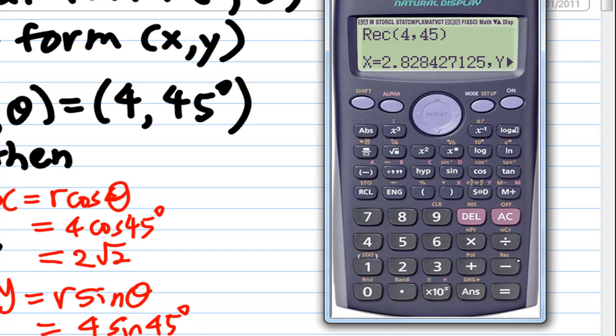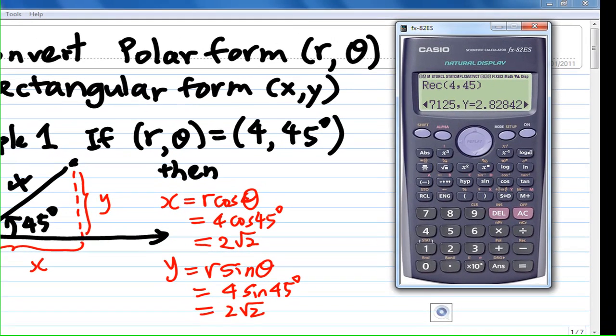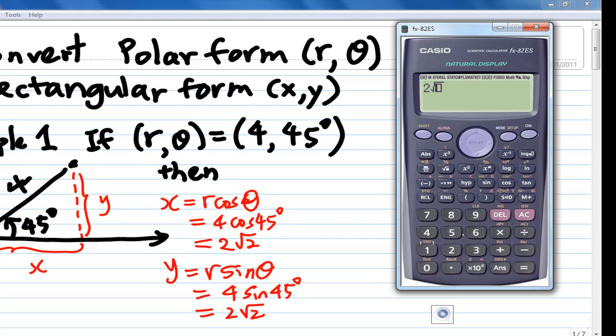So you see that x is 2.82427, which is 2√2. And y is equal to 2.8284. So we confirm all of them are 2√2. Because if you press 2 times square root 2, you will find that this converts to the decimal point 2.8284.